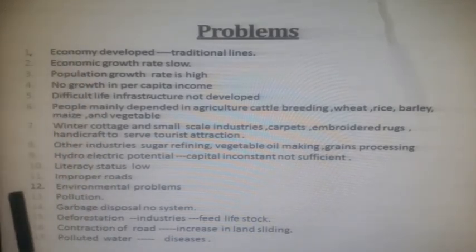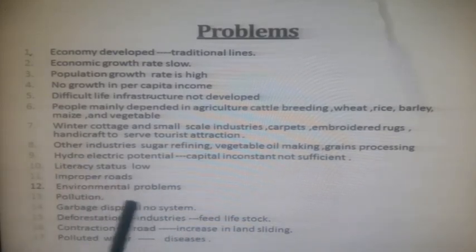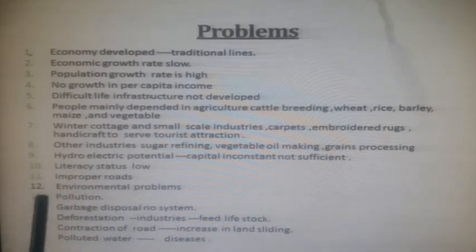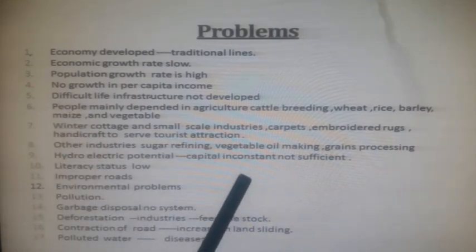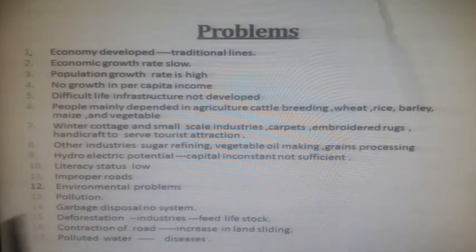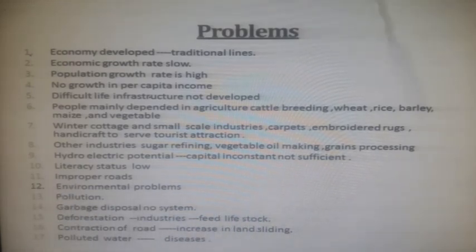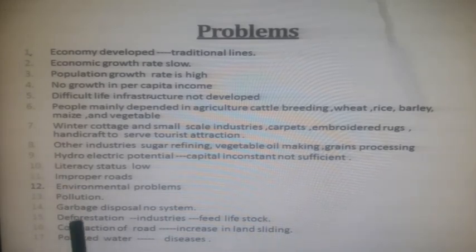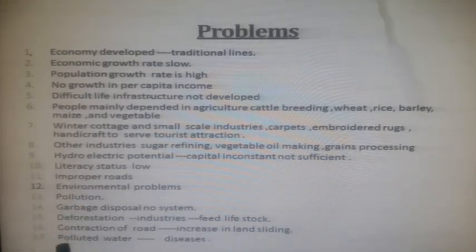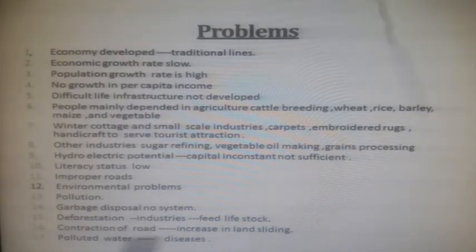Improper roads remain a problem. A major environmental problem is that tourism, if not managed properly, causes pollution on land, rivers, and in the air. There is no proper garbage disposal system. Deforestation — cutting down trees to feed industries and livestock — is occurring at a rapid rate, increasing soil erosion and causing landslides. Water pollution is also prevalent, and consuming polluted water causes diseases.